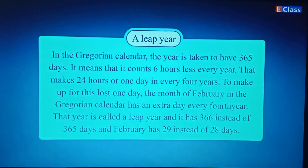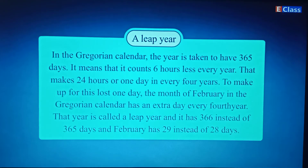A Leap Year: in the Gregorian calendar, a year is taken to have 365 days, meaning it counts six hours less every year. That makes 24 hours, or one day, every four years. To make up for this extra day, the month of February in the Gregorian calendar has an extra day every fourth year. That year is called a leap year and has 366 days instead of 365, with February having 29 days instead of 28.